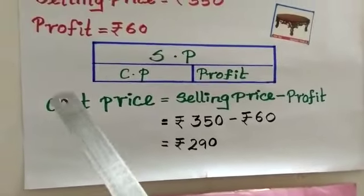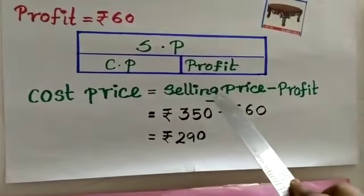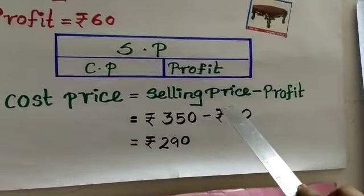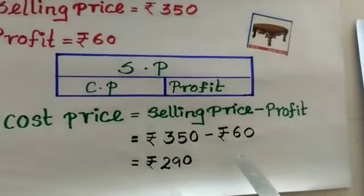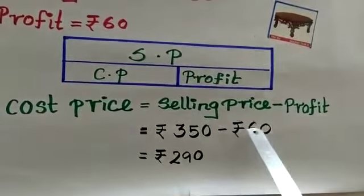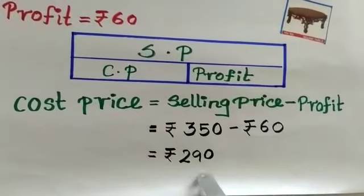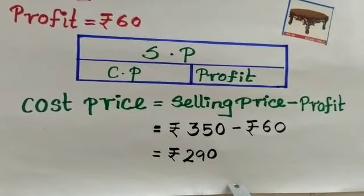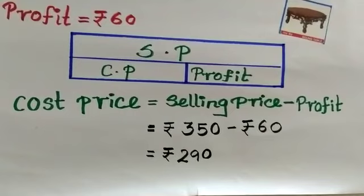The formula for finding the cost price is selling price minus profit. The selling price is Rs. 350 and the profit is Rs. 60. When we subtract Rs. 60 from Rs. 350, we will get the answer as Rs. 290. So, the cost price is Rs. 290.